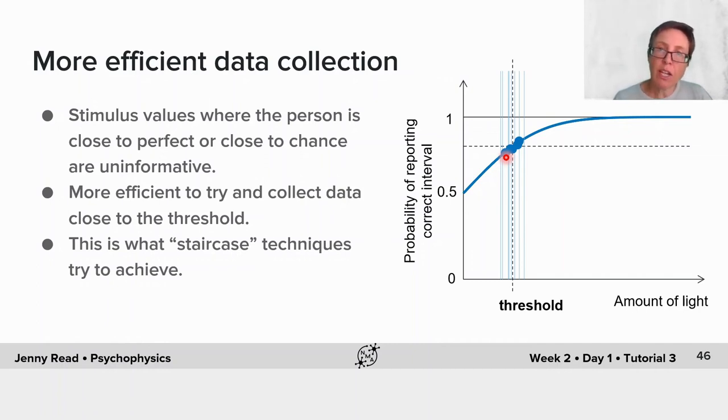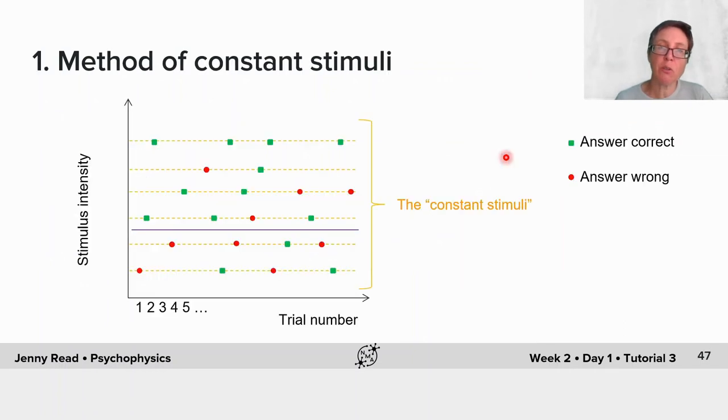To talk you through a staircase, I'm first going to show you an alternative way of representing the method of constant stimuli. Now I've got stimulus intensity at the y-axis, and along the x-axis, I've got trial number.